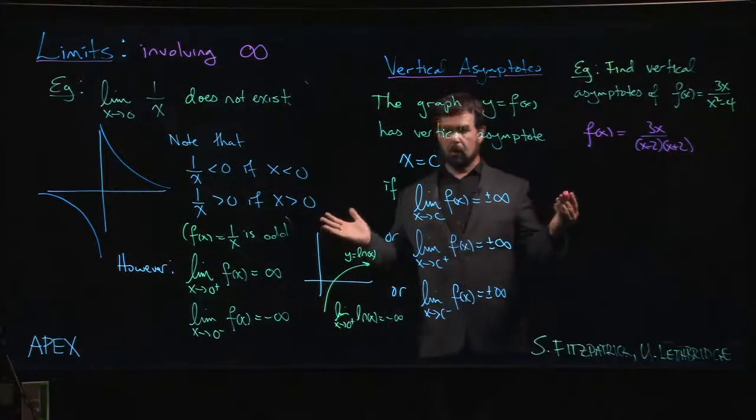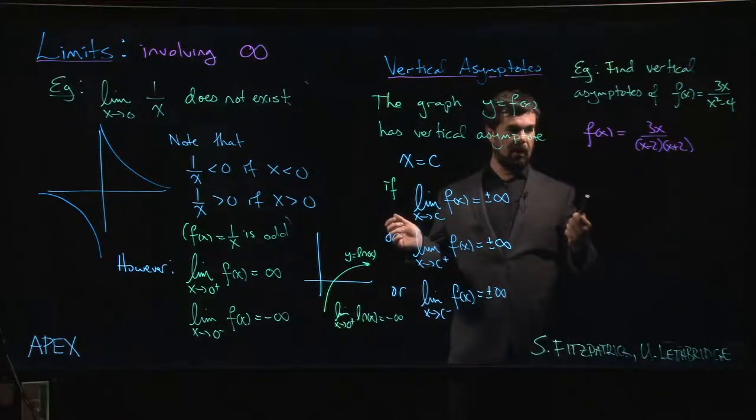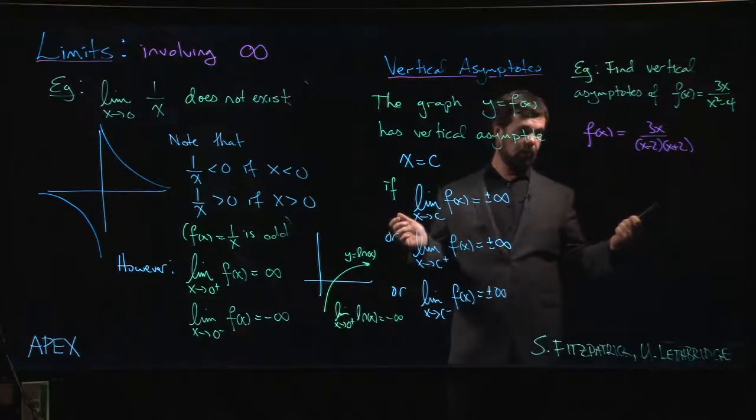If you see division by 0 and if it isn't cancelled by a corresponding 0 in the numerator, chances are you have a vertical asymptote.